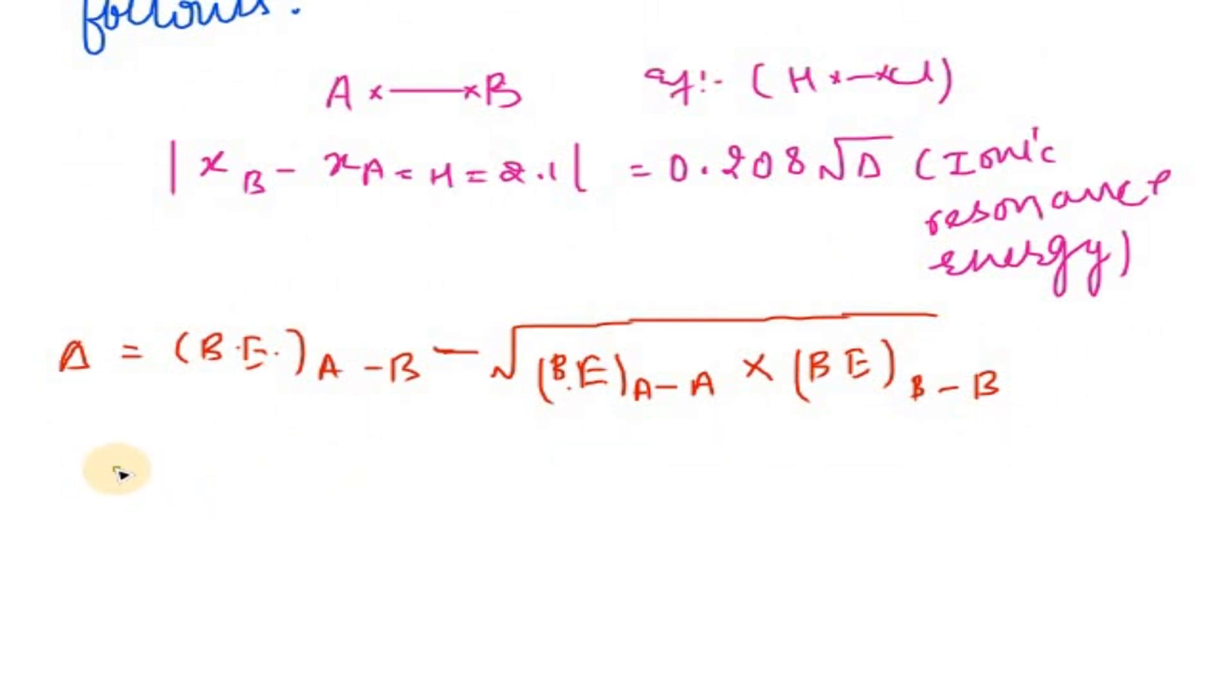The bond energy data are in kilojoules per mole. So here we have to put the data in bond energy in kilojoules per mole. We can calculate the value of delta, and then put the value of delta in the formula to get the electronegativity difference between A and B.